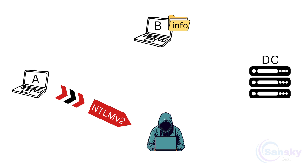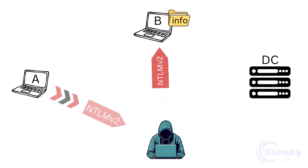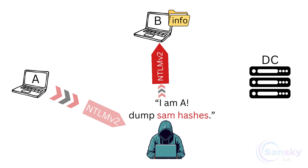A, unaware of the deception, sends its NTLMV2 hash to the attacker, thinking they are authenticating to a valid system. The attacker then takes the NTLMV2 hash received from A and sends it to B, claiming to be A, and asks B to dump all of its SAM hashes.